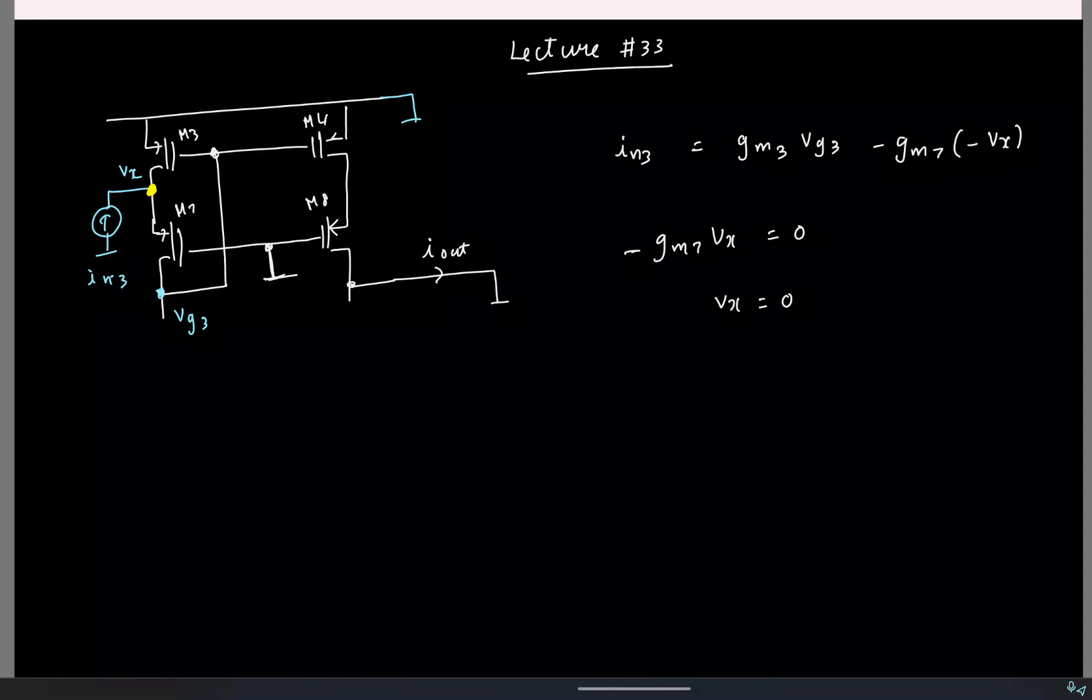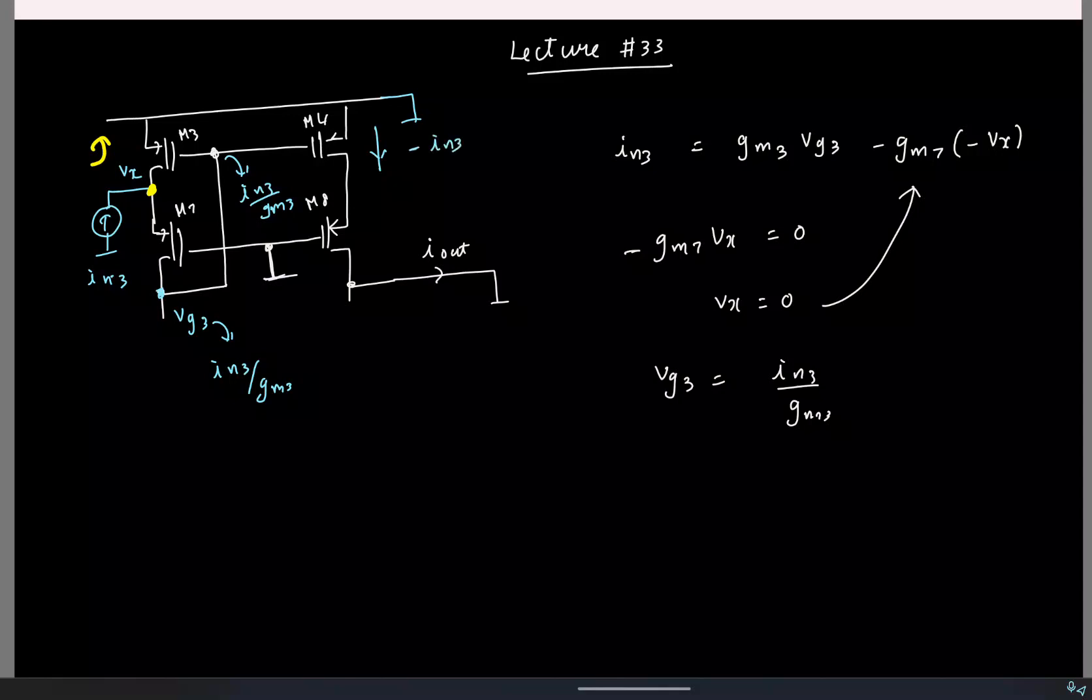So, you cannot say what is the current going up and what is the current going down. And now once we know this we can directly find everything else. So, if I put Vx to be 0 here what do I get? Vg3 is IN3 by gm3. So, this is IN3 by gm3. So, what will be the incremental current here? It is basically gm minus gm Vgs source to drain. So, we will have minus IN3. So, finally the current is minus IN3 but the mechanism it takes to come here is not as straight forward as I explained, should have been very careful, apologies for that.